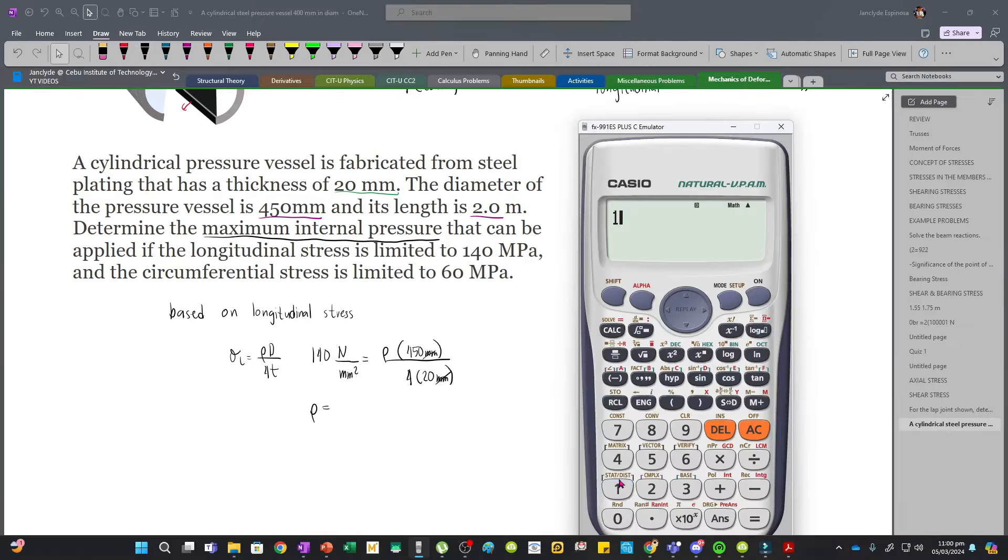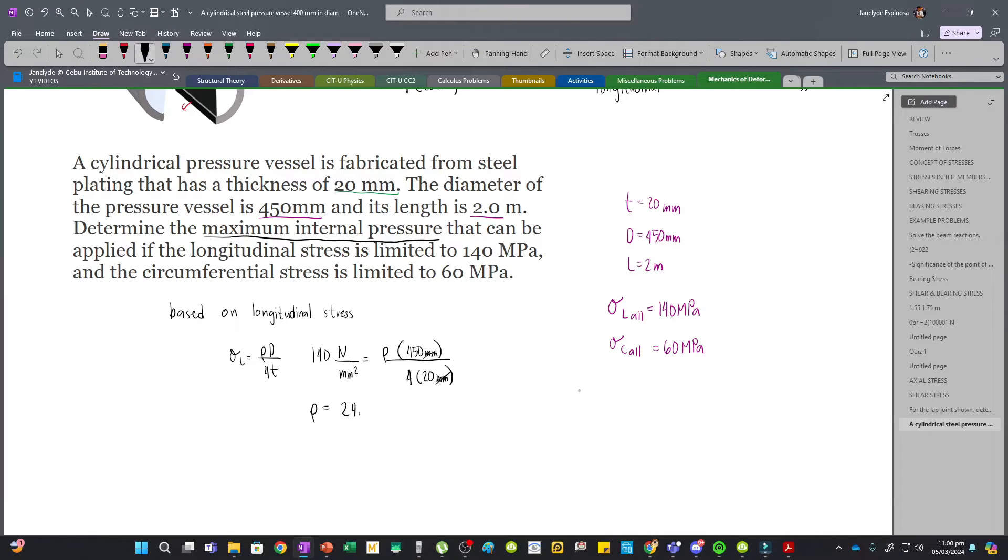So our pressure is 140 times 4 times 20 divided by 450, that will be 24.89 MPa because this is a non-terminating decimal.